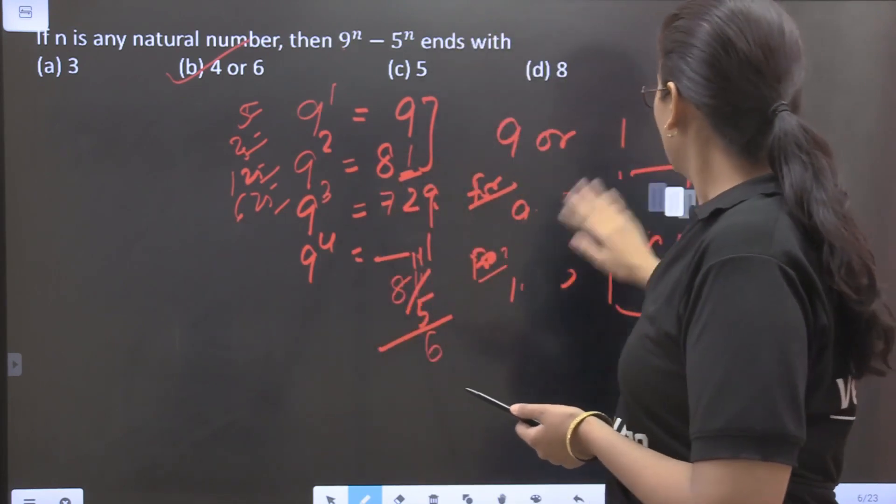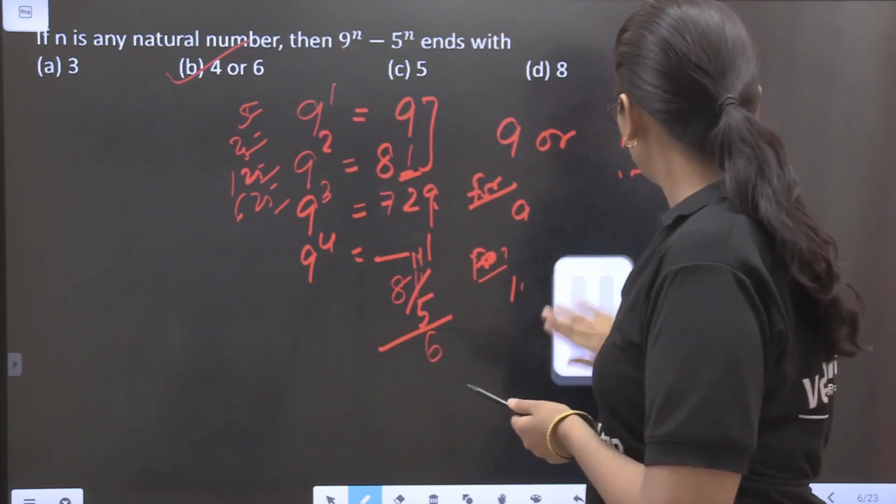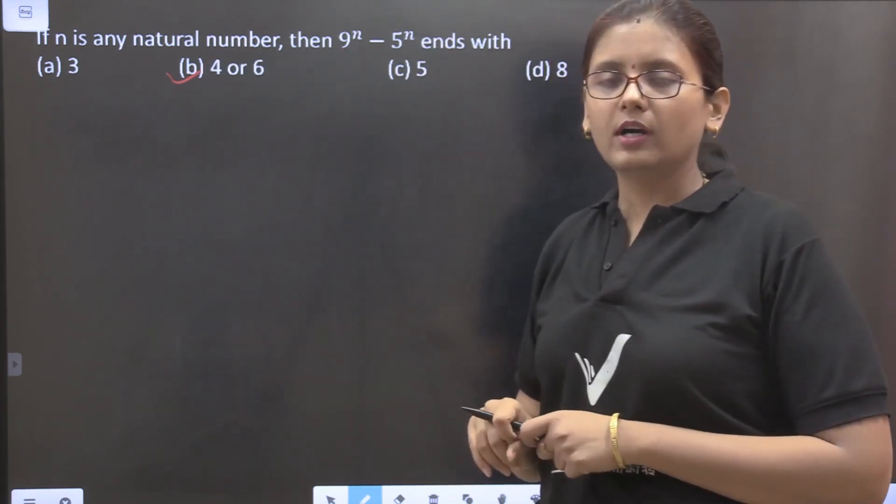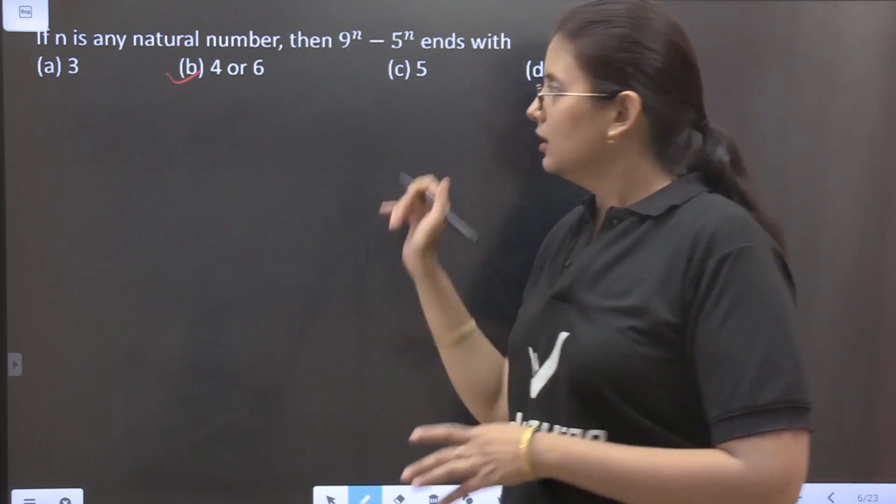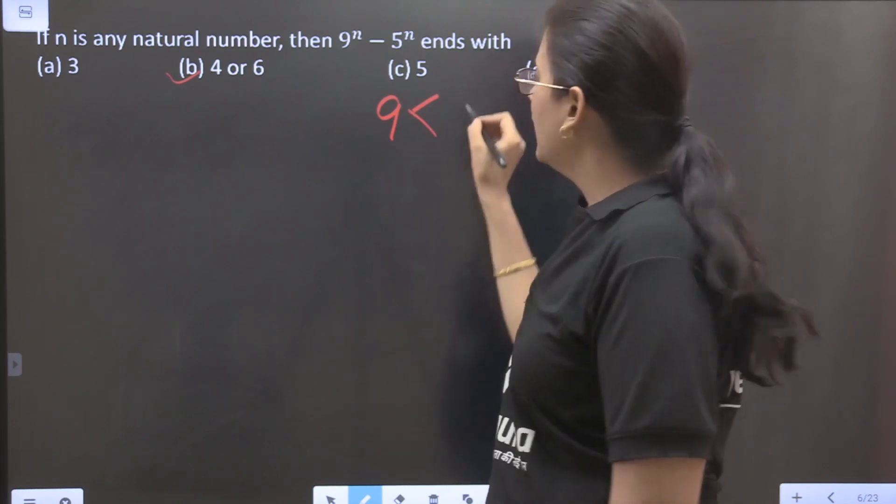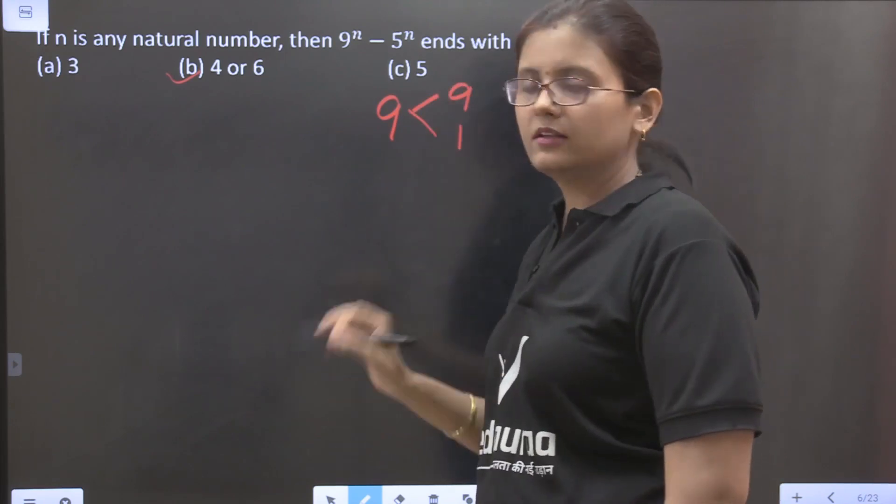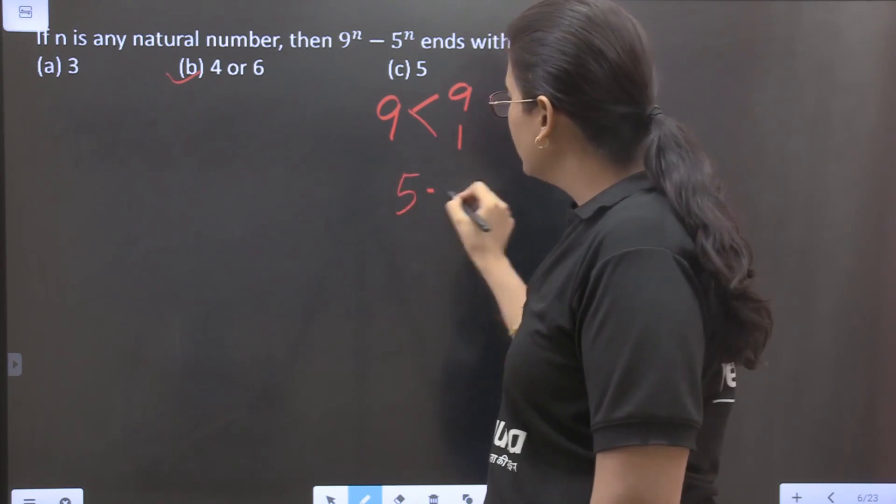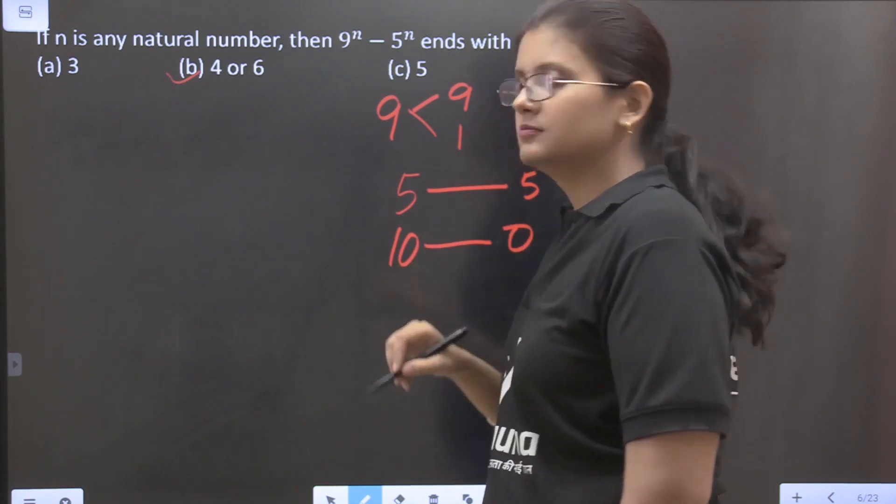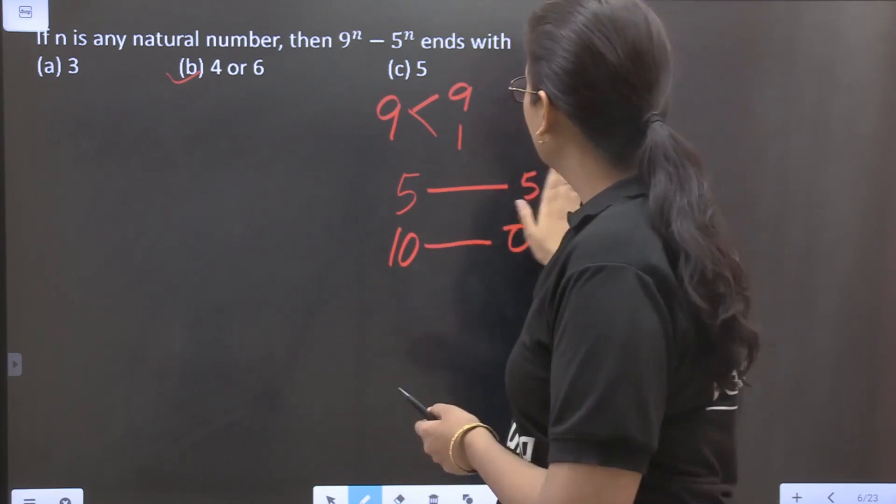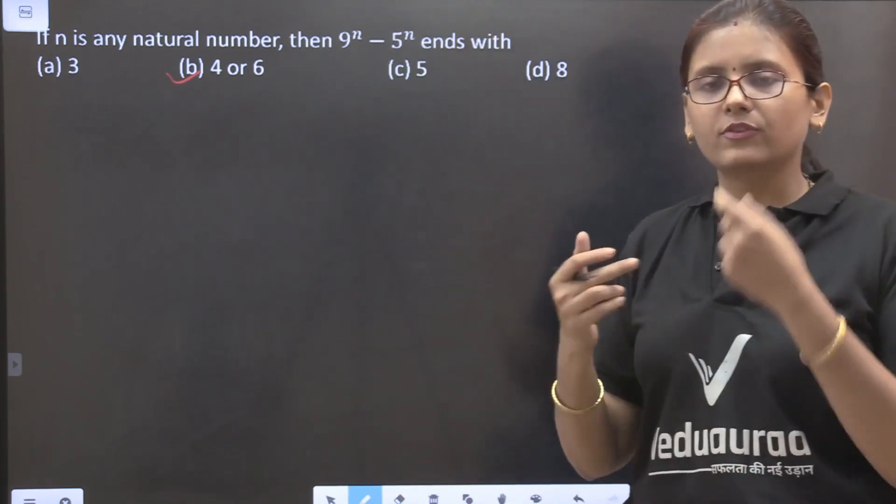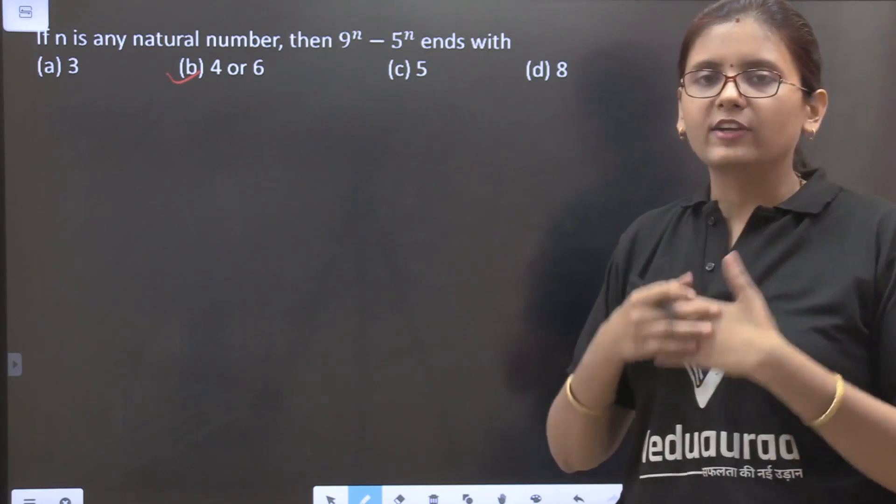When you get these type of questions, you should always remember what could be the ending of a particular number. Like here we know that for 9 it will always be either 9 or 1. For 5 it will always be 5. For 10 it will be 0. So this way you have to remember these things. While we are doing the problems one by one, one concept will come up. So try to remember it.